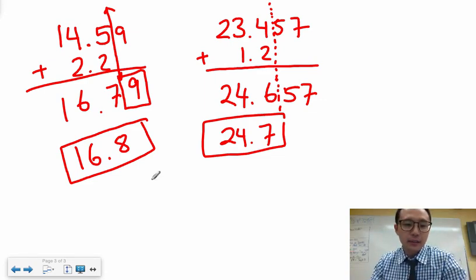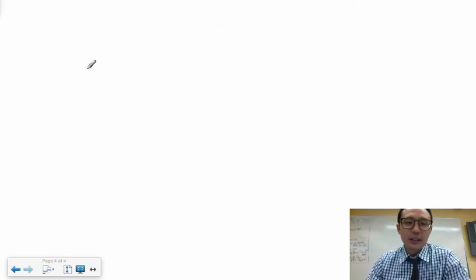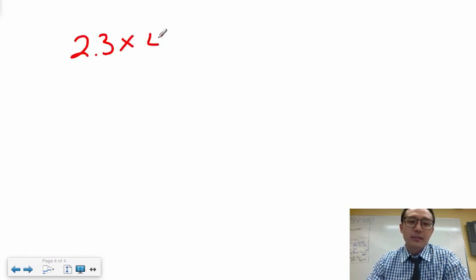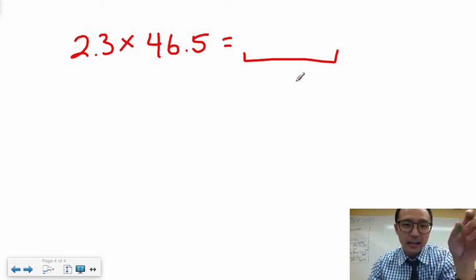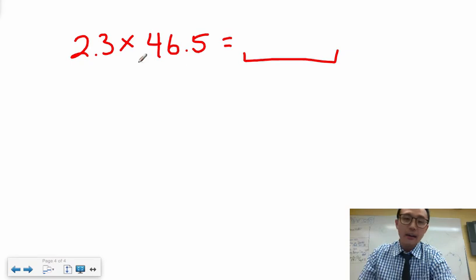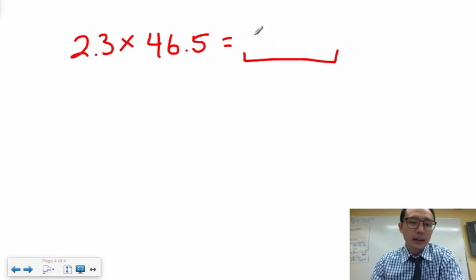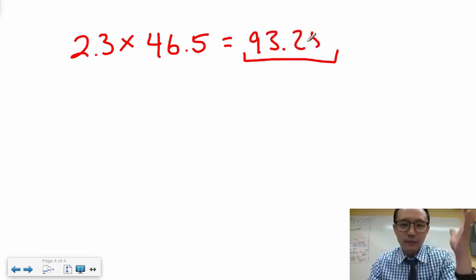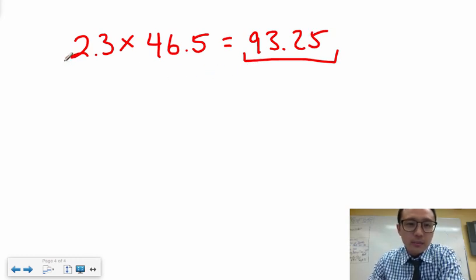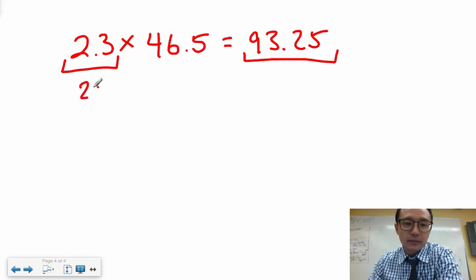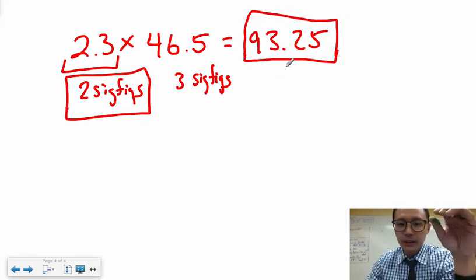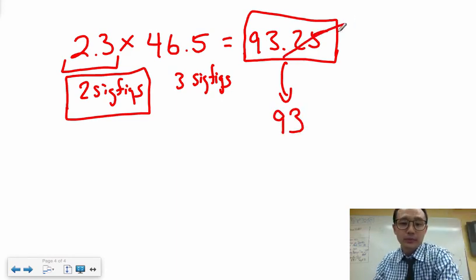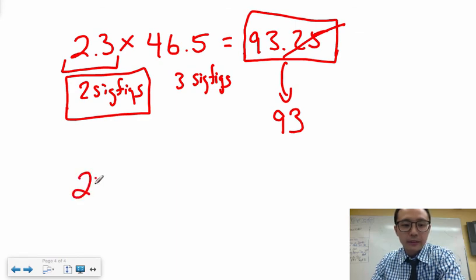For multiplication, it's even easier. If you have 2.3 times 46.5, your final answer must have the same number of sig figs as the smallest in the question. So if the calculated result is approximately 93.25, since 2.3 has only two sig figs and that's the smallest, the answer must be rounded to two sig figs — which gives 93.